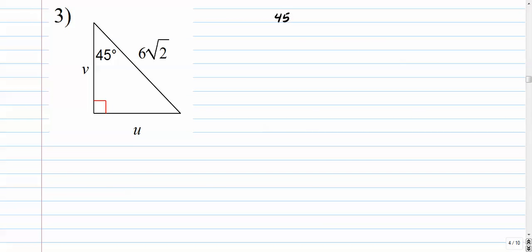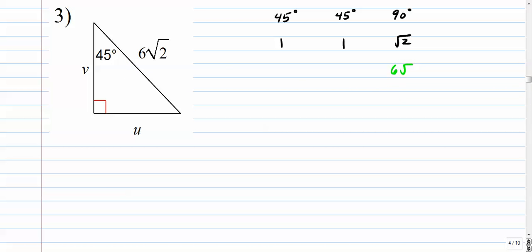Number 3: this is a 45-45-90, so the ratio is 1, 1, radical 2. We examine what we're given — the hypotenuse is 6 radical 2. We kind of have to work backwards. If the hypotenuse is 6 radical 2, the ratio tells us each leg is 6. So u is equal to v, and they're both equal to 6.